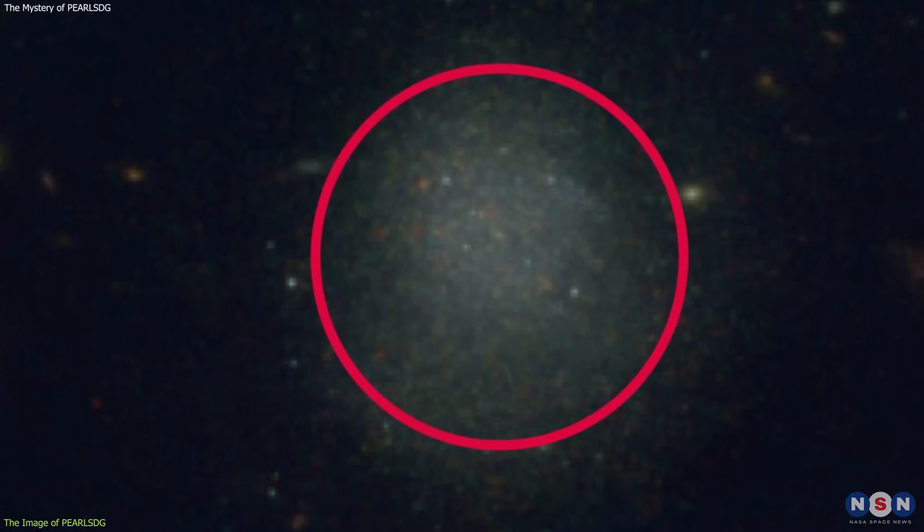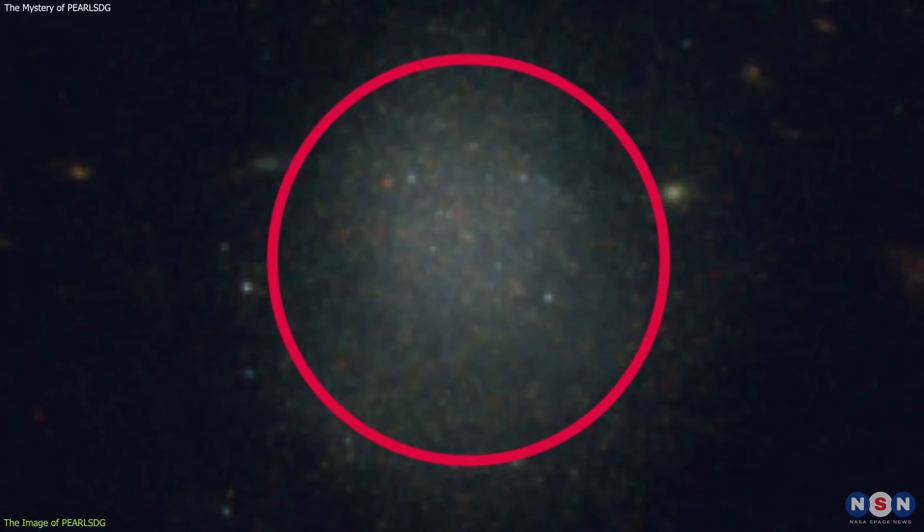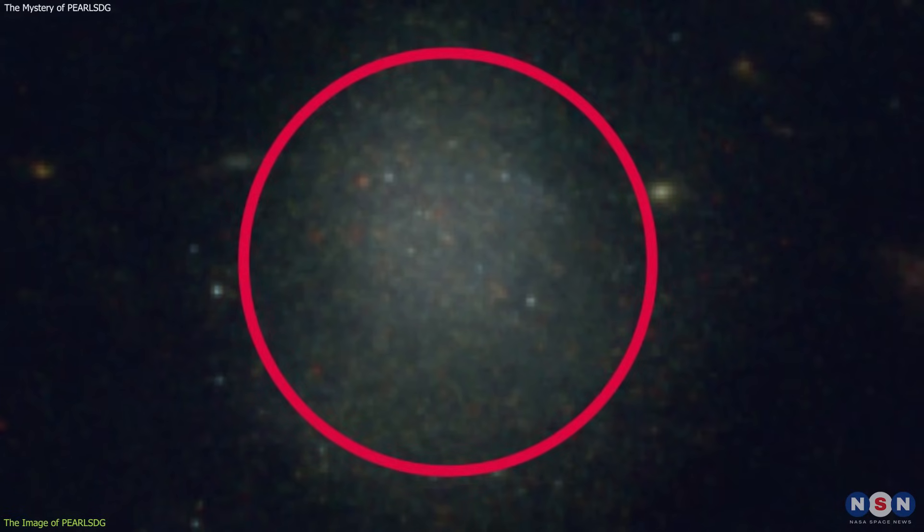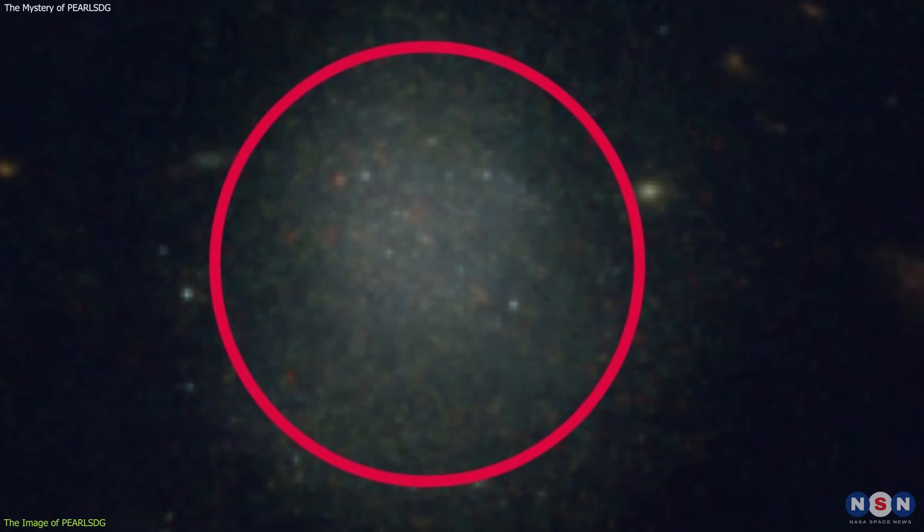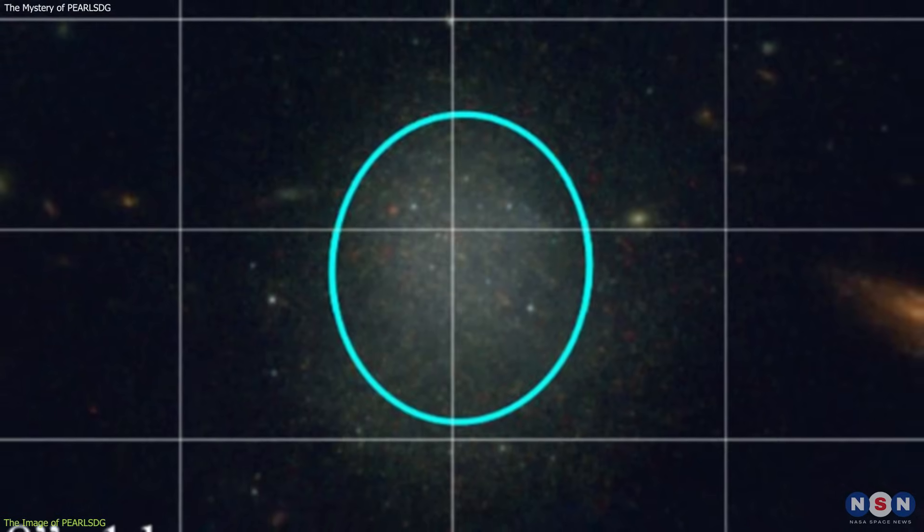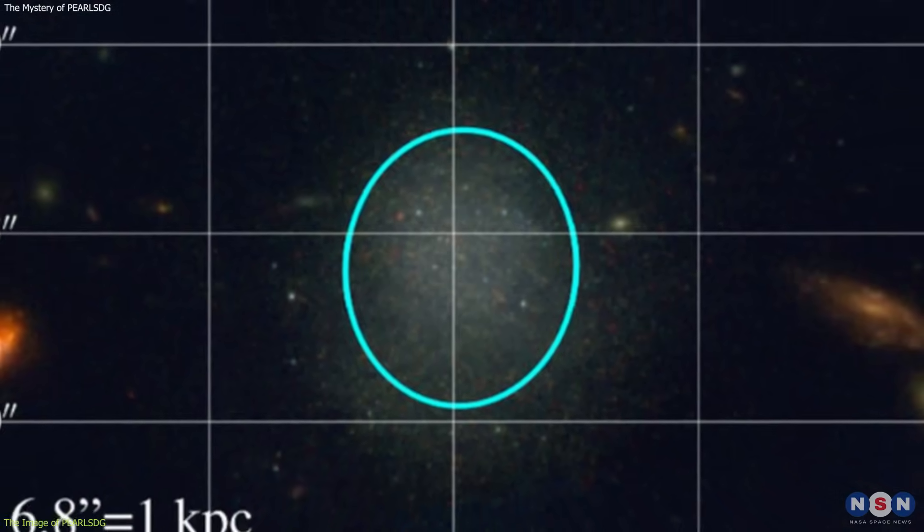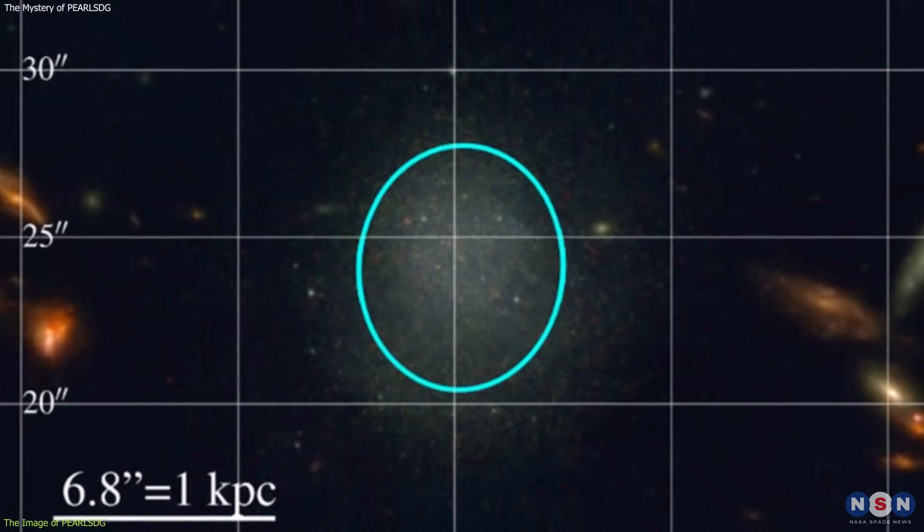As you can see, PEARLS DG appears as a small and faint red dot in the center of the image, surrounded by a halo of diffuse light. It is barely visible, and it is easily overshadowed by the brighter and larger galaxies around it.